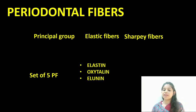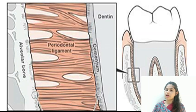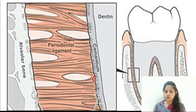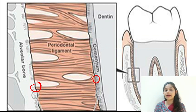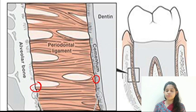The third major group is the Sharpey's fibers. These are a component of the principal fibers which extend into the root cementum or into the alveolar bone. The principal fibers that get inserted into the root cementum or alveolar bone become calcified and become associated with certain proteins like bone sialoprotein or osteopontin, forming the Sharpey's fibers — a minor component of the periodontal ligament fiber group.